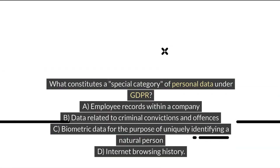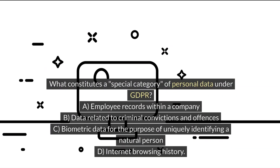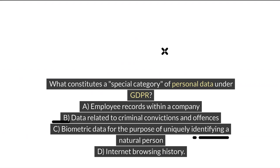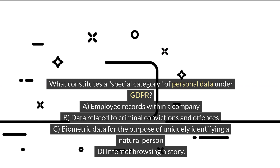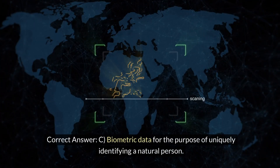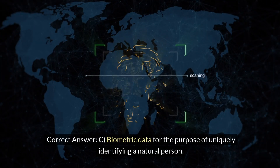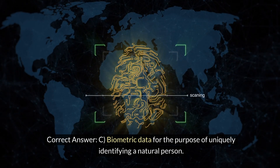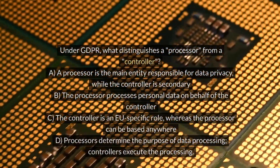What constitutes a special category of personal data under GDPR? A. Employee records within a company. B. Data related to criminal convictions and offenses. C. Biometric data for the purpose of uniquely identifying a natural person. D. Internet browsing history. Correct answer: C. Biometric data for the purpose of uniquely identifying a natural person.